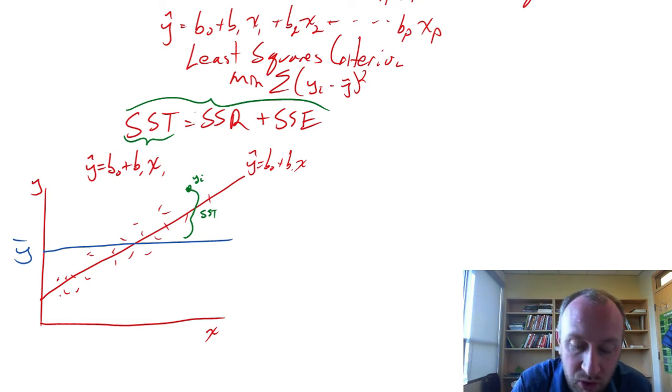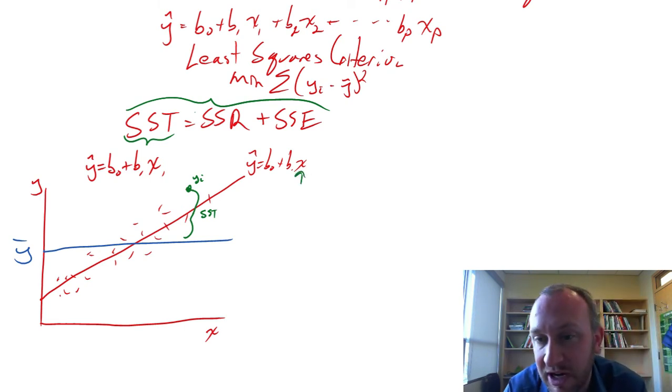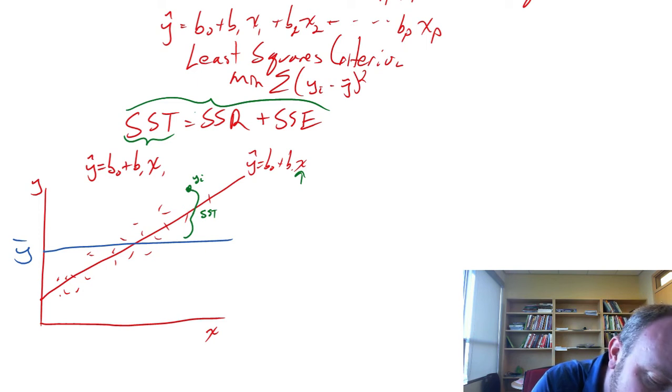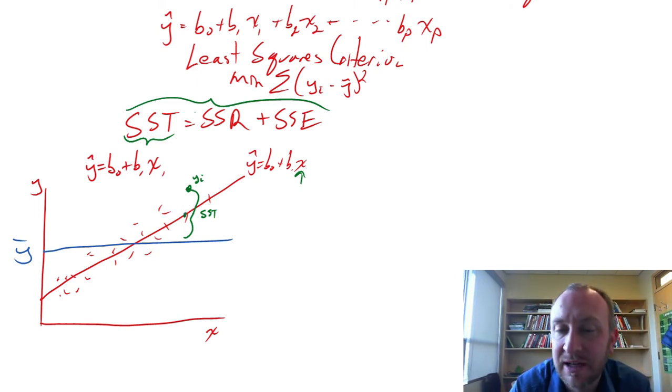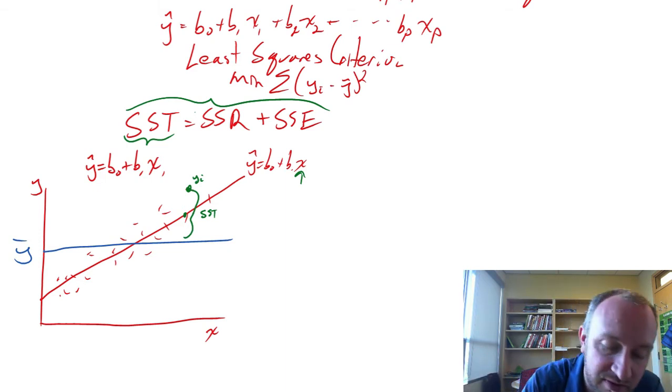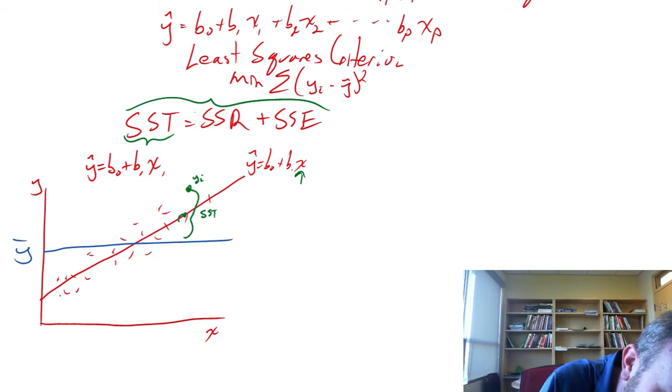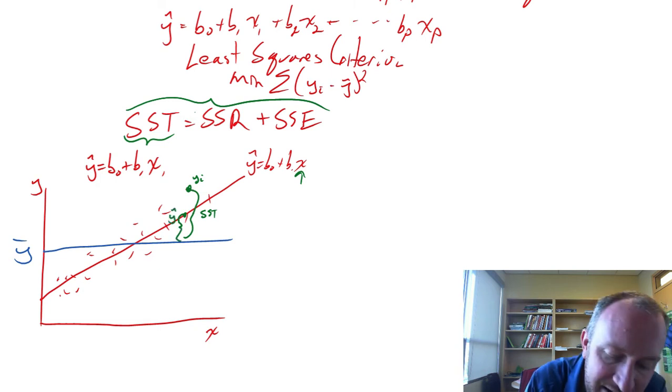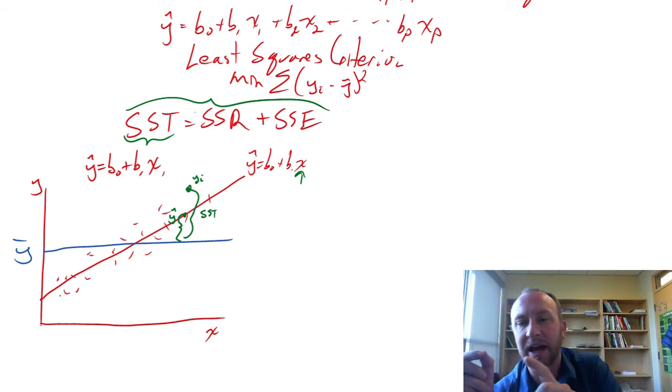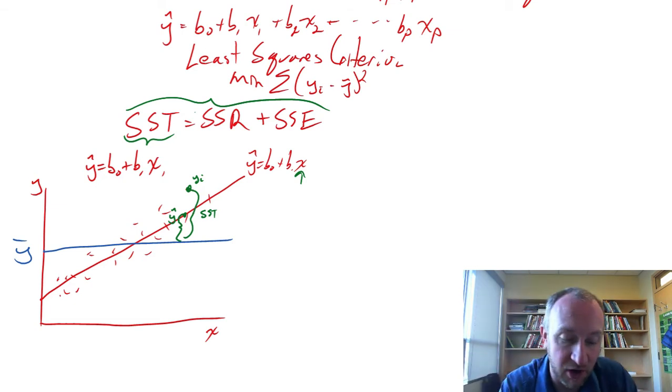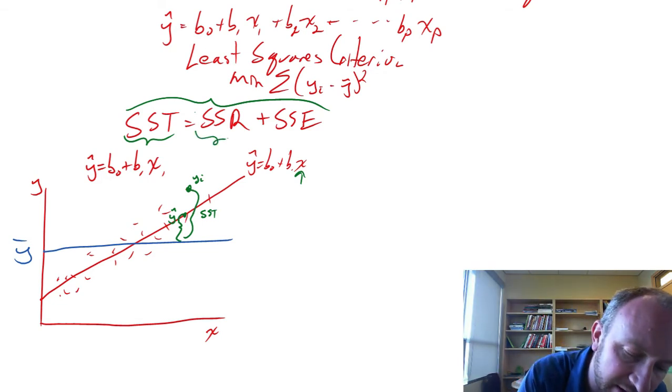Now, we incorporate this additional piece of information into our regression and this allows us now to capture or predict some value for y, for the dependent variable. So this difference, this is a y-hat, so this difference between y-hat and y-bar, again, if we square all those differences for all of these observations, add them up, that gives us SSR.